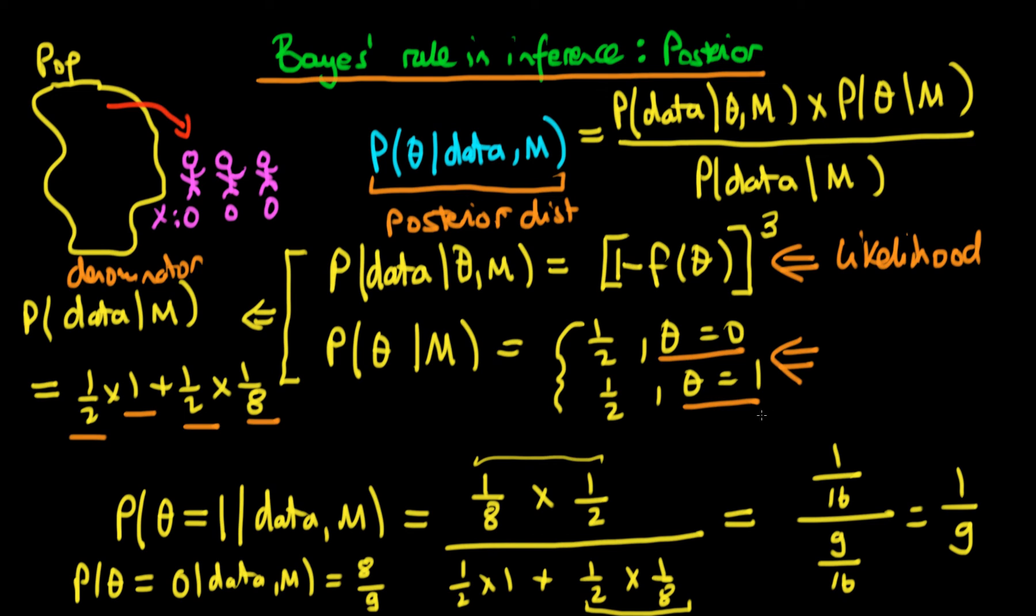So what do we note here? Well, we note that we started off actually being relatively ambivalent between a given tribe having the disease or not having the disease. And in fact, we said that beforehand, we might specify that the probability of having the disease is actually a half. And then after we've received this data, we say that for all of these individuals, the probability that they actually do come from a tribe which does have the disease is only one-ninth. So I think that that's quite notable.